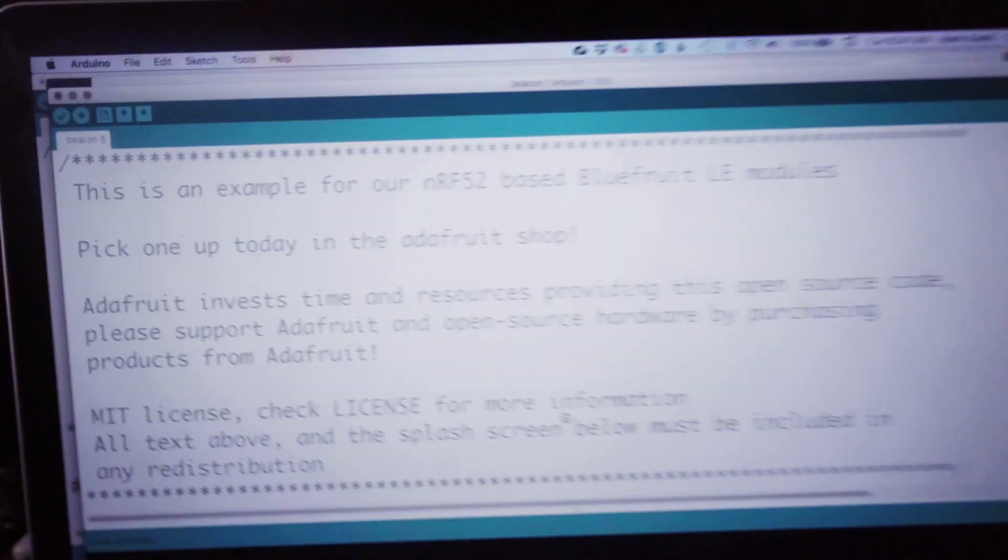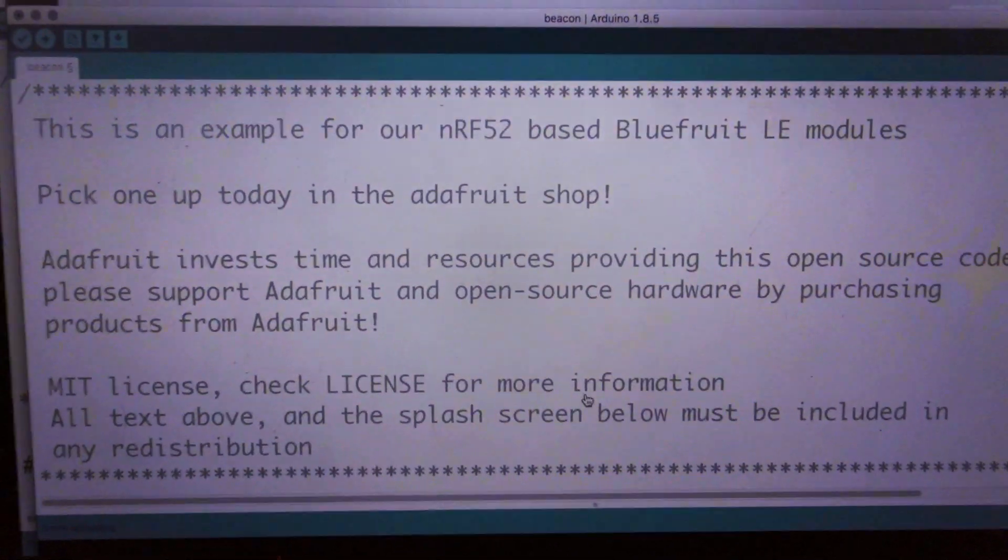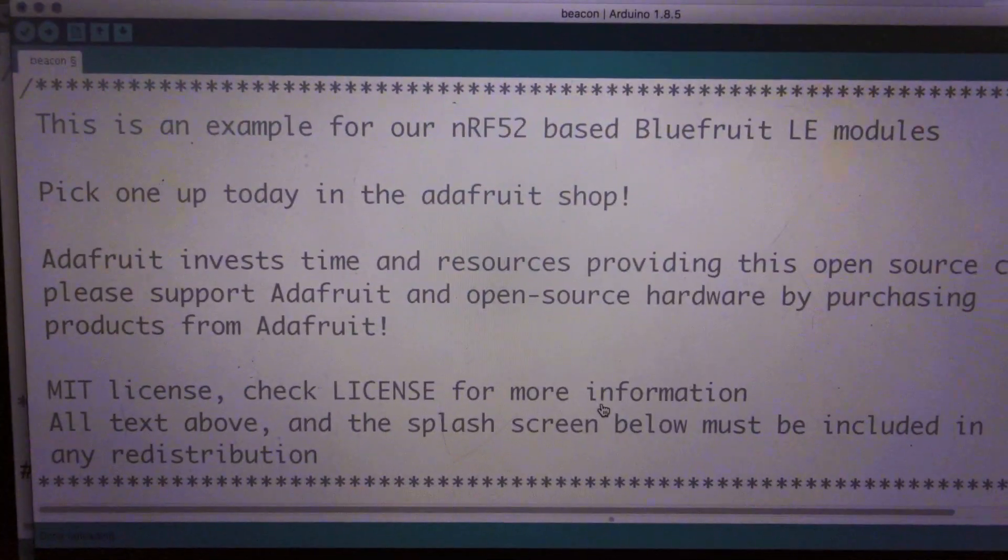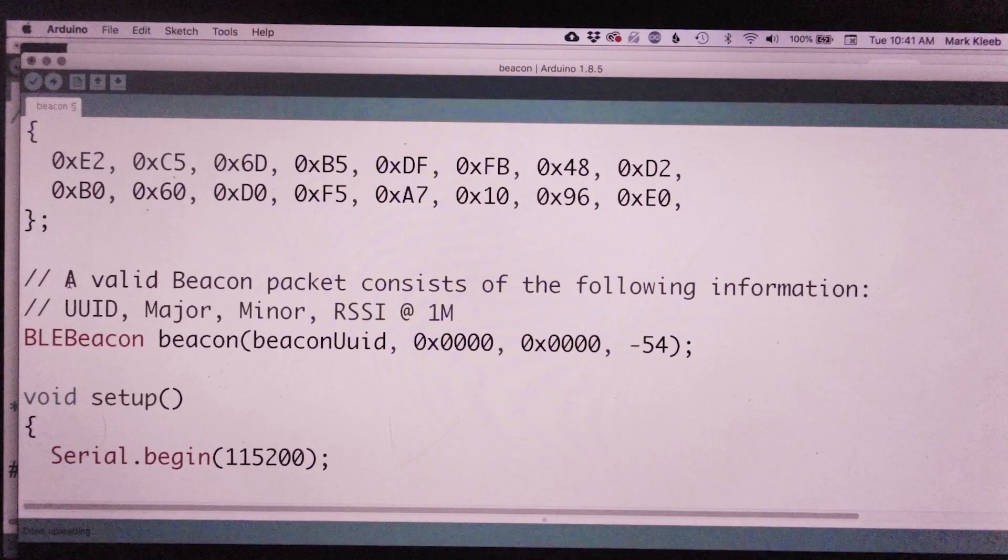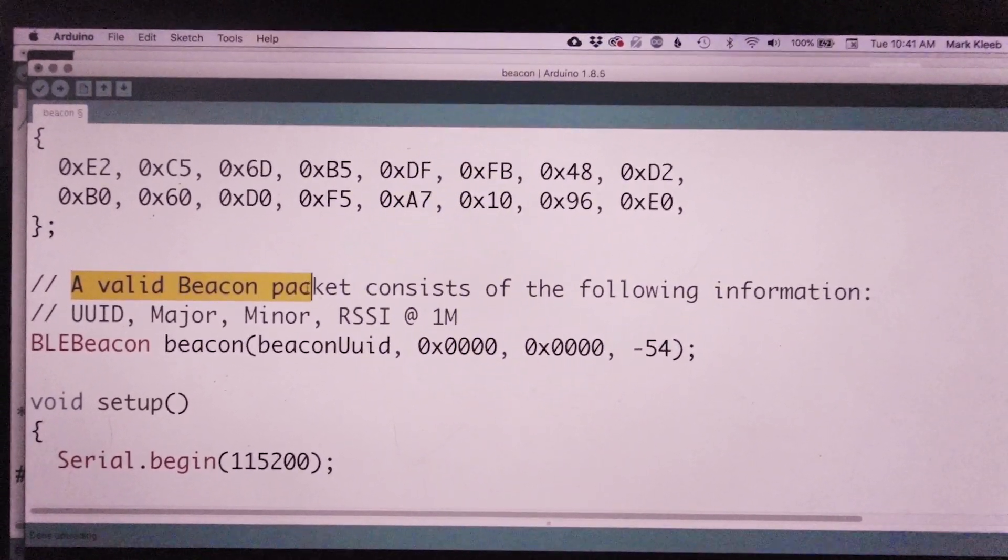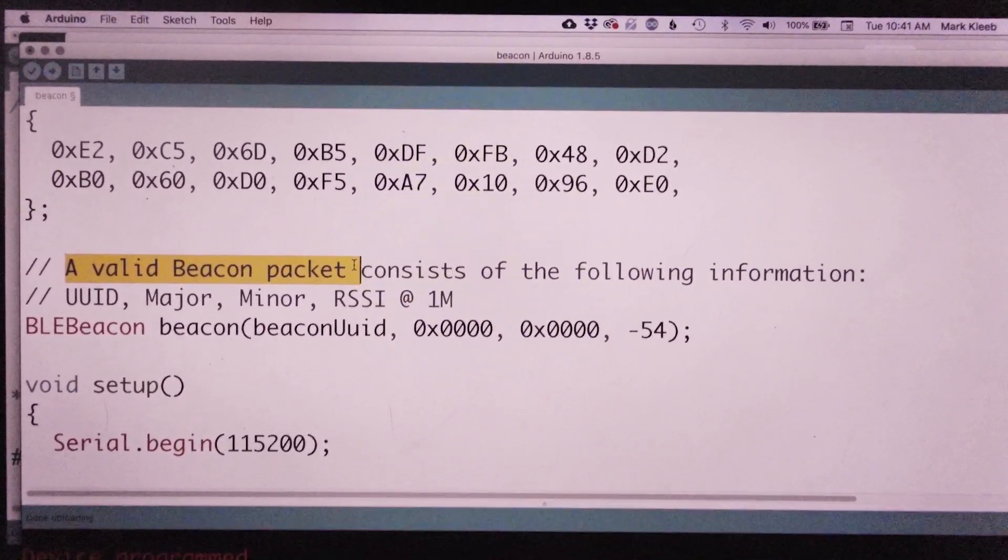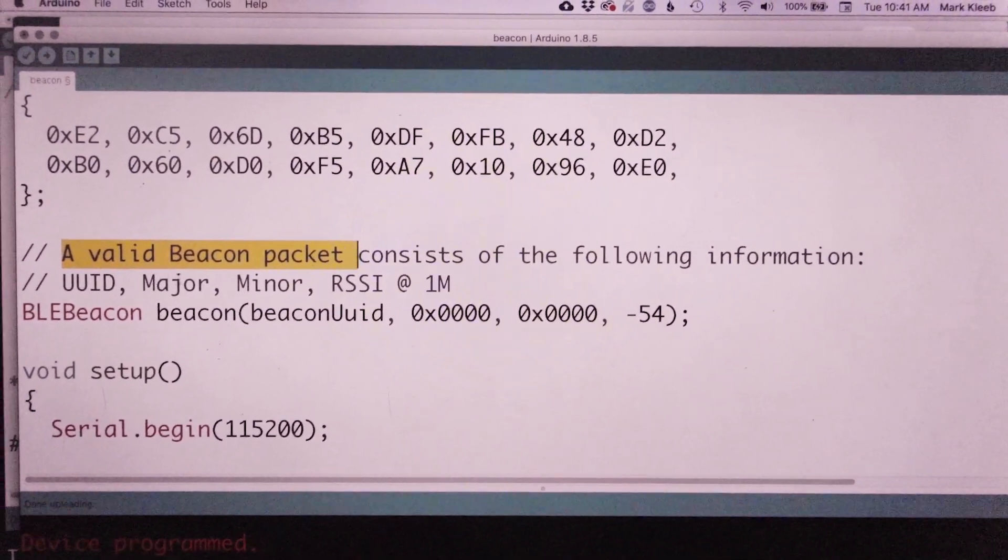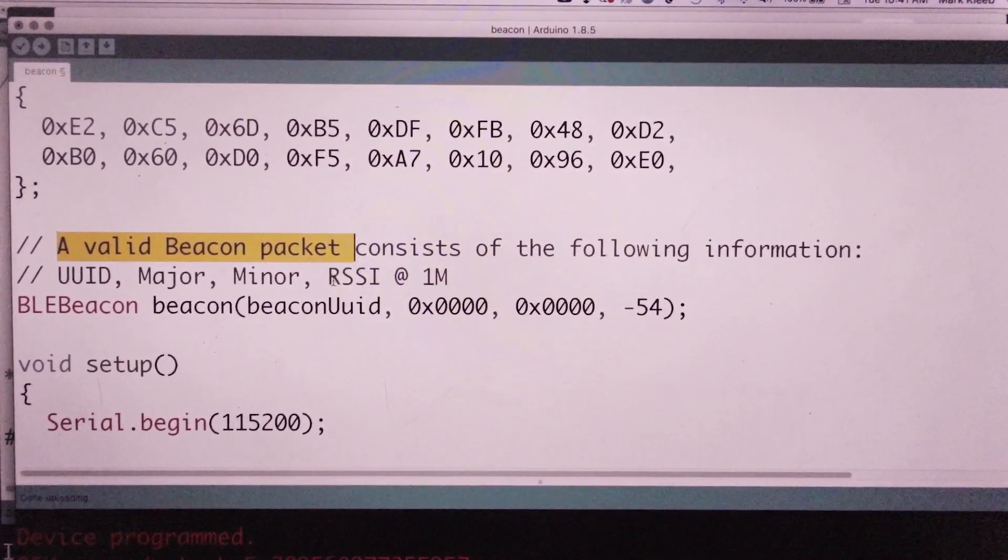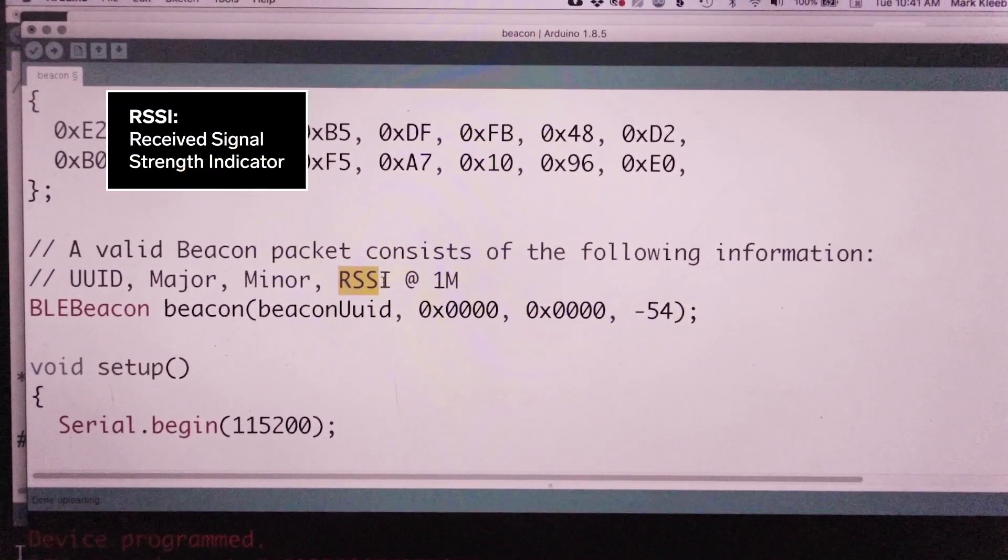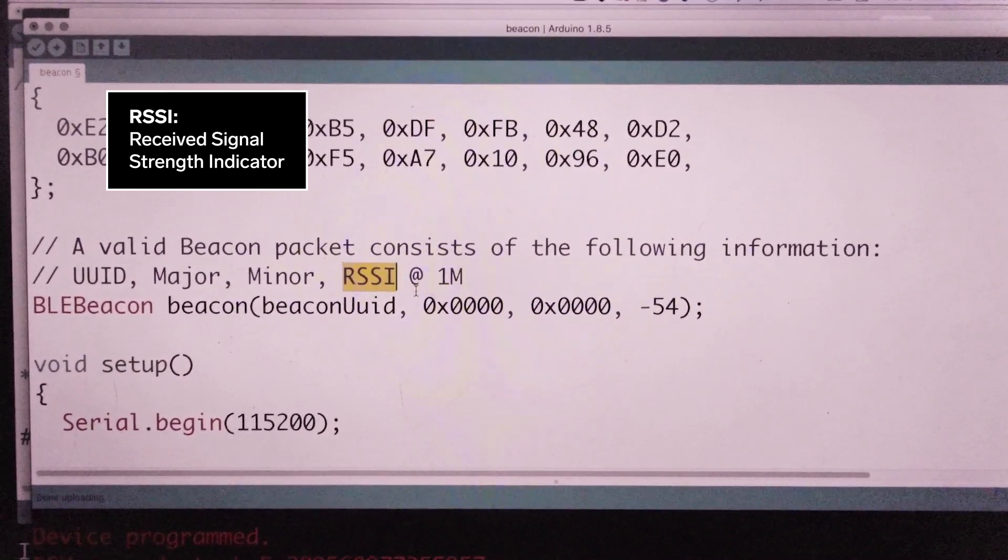I found some example code to transform my Bluefruit sense into a beacon. This is a valid beacon packet. So this is what's going to be transmitted. I'm going to get the ID, the major and minor, and the RSSI.